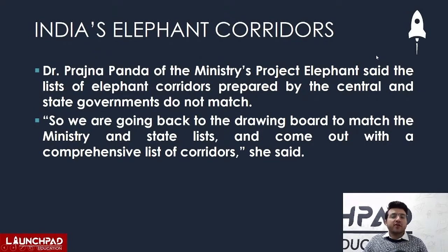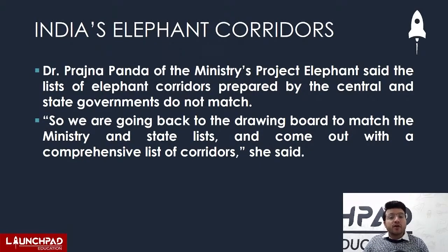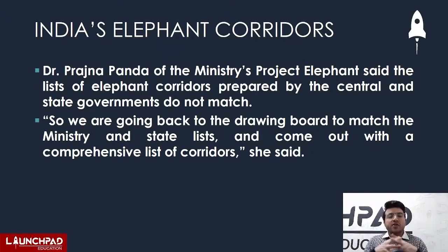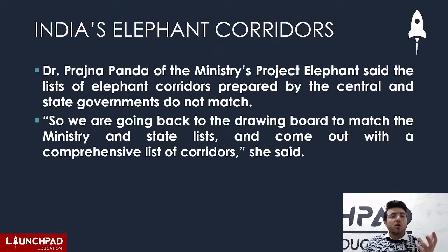Under Project Elephant, these things are important for the government. Corridors prepared by the central government and state government don't always match. So the goal is to match and coordinate the central and state government lists of corridors into a coordinated effort to save elephants.